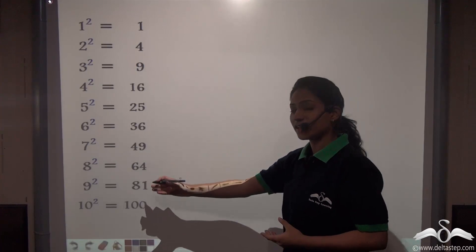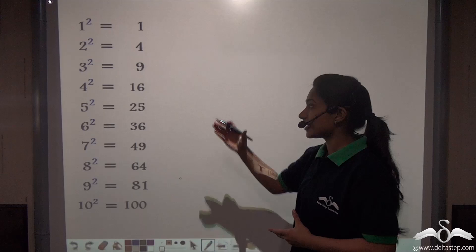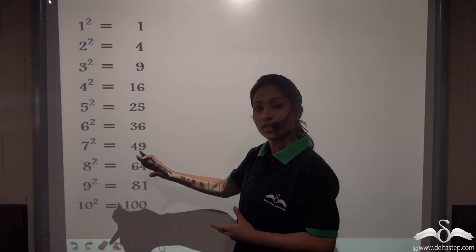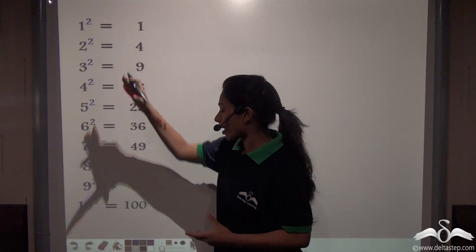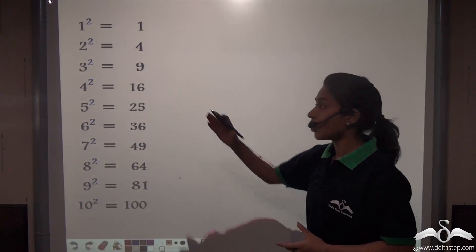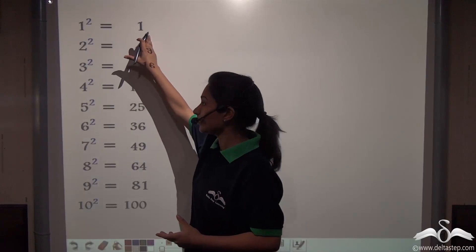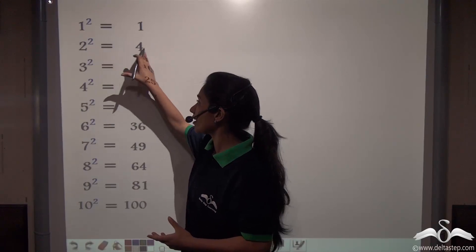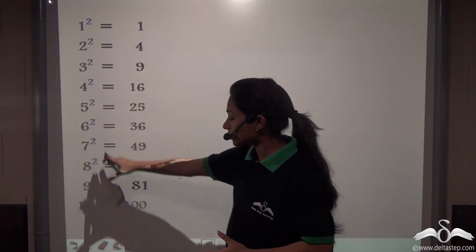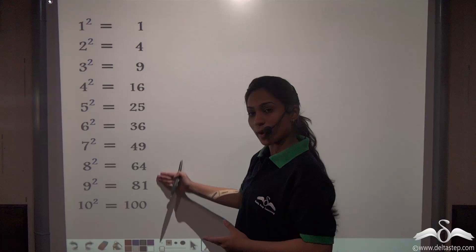Look at the list of these square numbers. These are the perfect squares of the numbers from 1 to 10. You can see 1 squared gives 1, 2 squared gives 4, similarly 3 till 10. You get these squares.